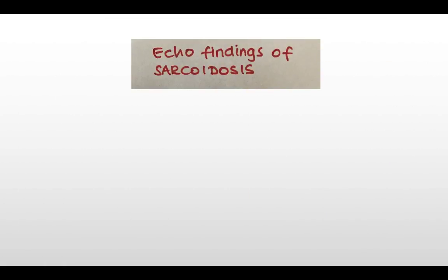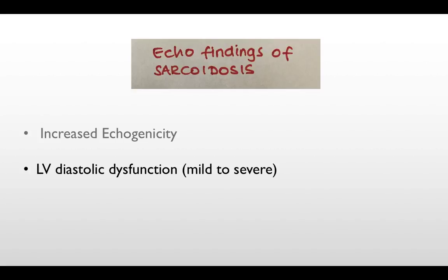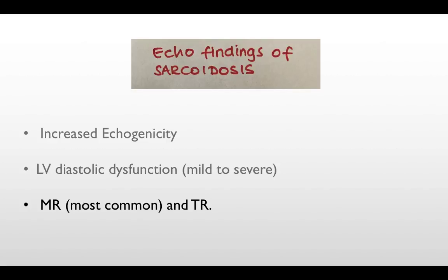Are there any other echo findings you expect to see in such patients? Yes. Increased echogenicity of the myocardium is an important feature. Diastolic dysfunction of the left ventricle with different grades from mild to moderate and severe. Valvular involvement by the sarcoid process is also important to look for — either due to direct granulomatous infiltration of the valves or secondary to the cardiomyopathic changes. The commonest valve involved is the mitral valve, followed by tricuspid regurgitation.